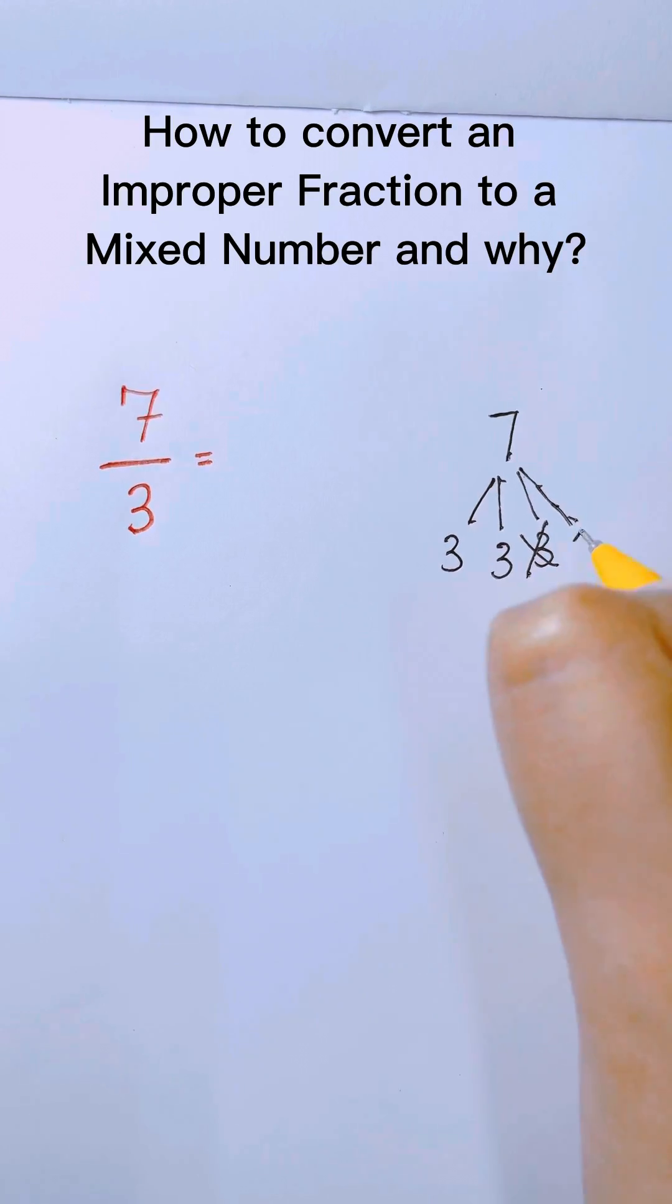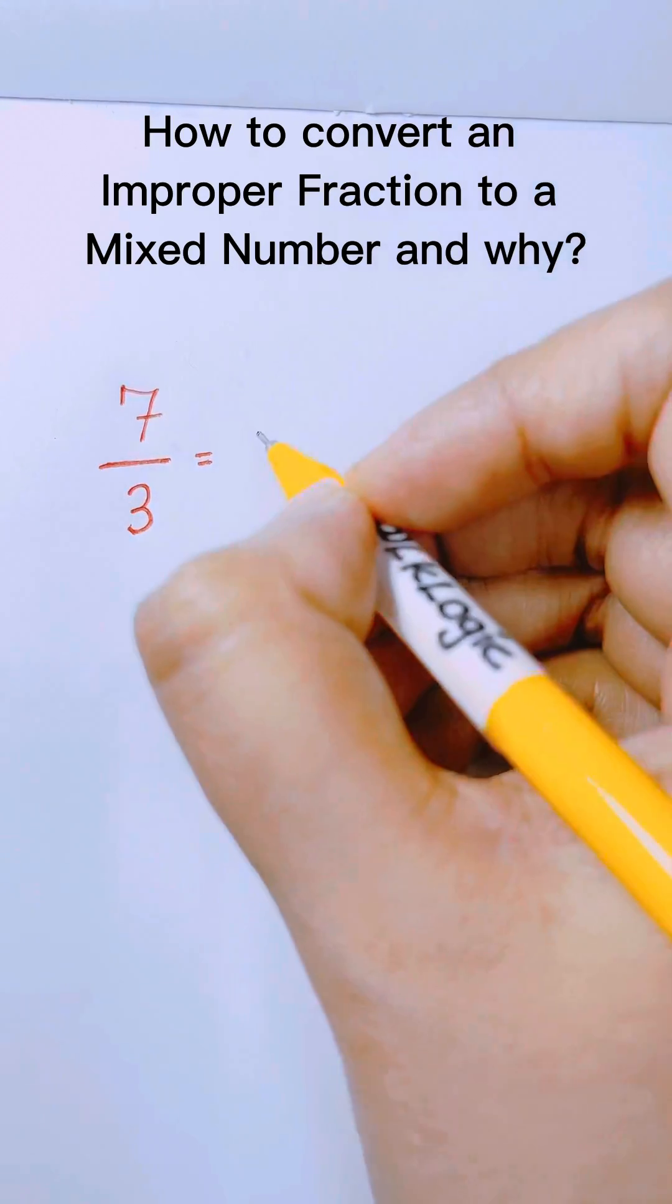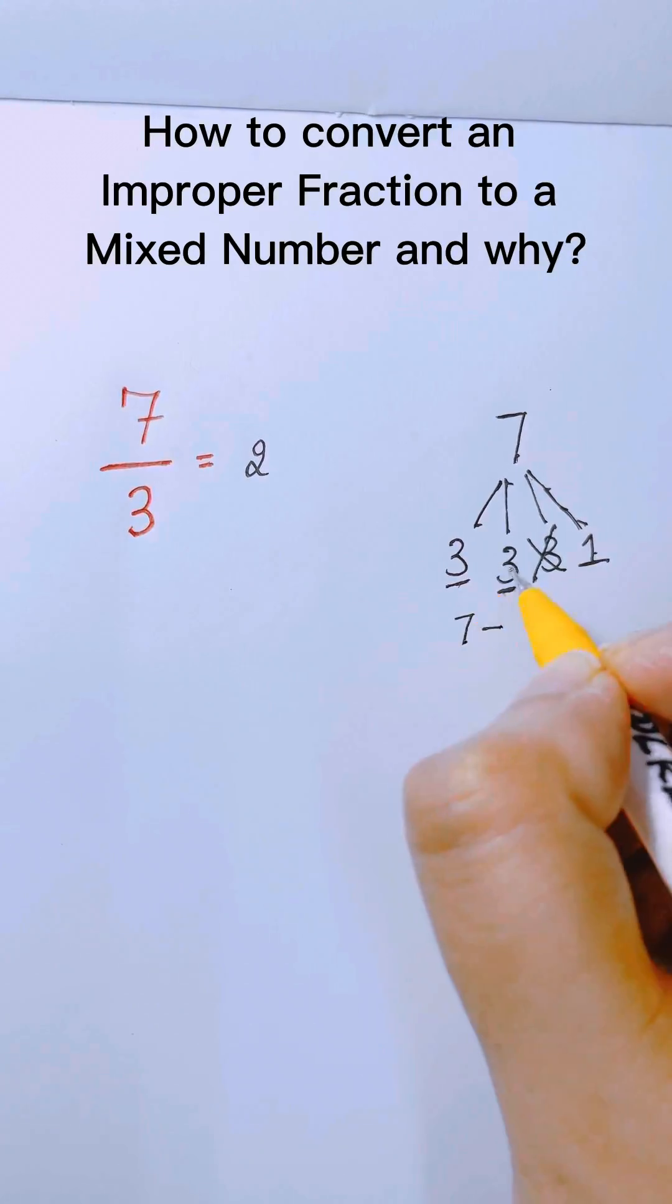So you can only have a 1. So 3 plus 3, 6 plus 1 is 7. So you have 2 wholes, and you have a remainder of 1 there.